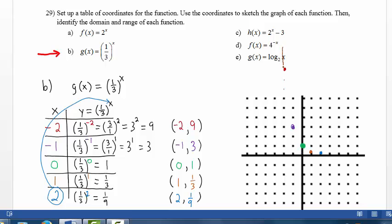Now we can draw the graph of this function. And here we have the graph of g of x equals 1 third to the x power.